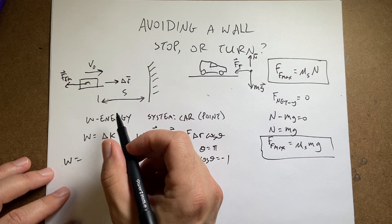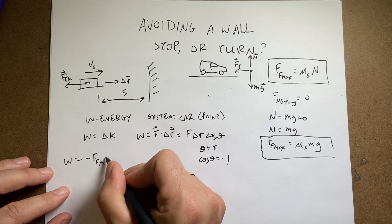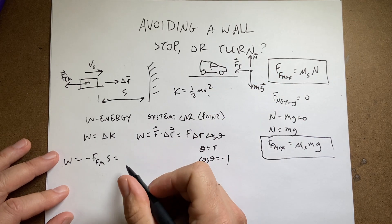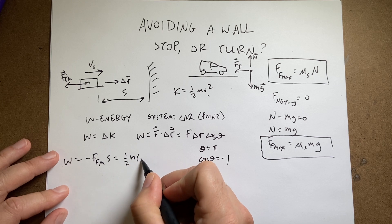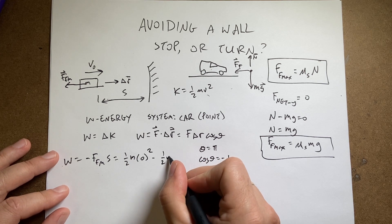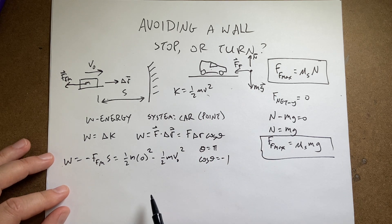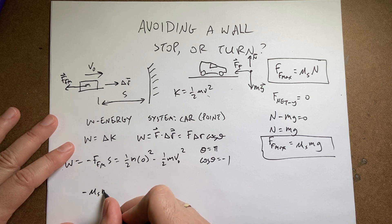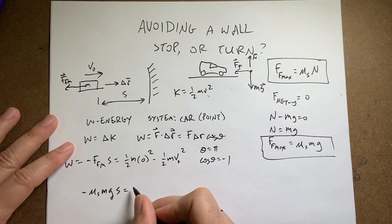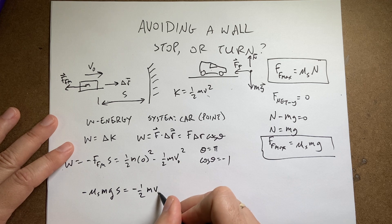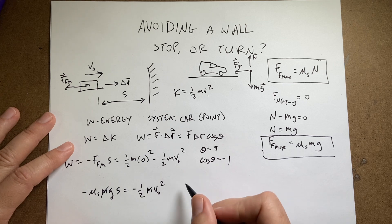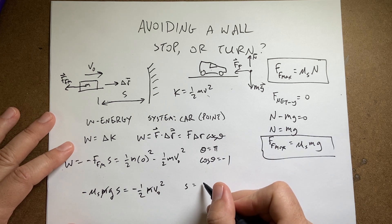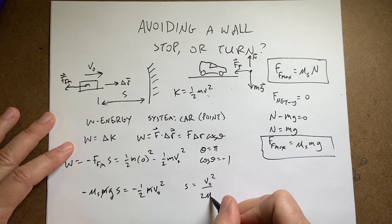So the work done, and I'm going to use s as my distance, is going to be negative the frictional force max times s. And that's going to be equal to the change in kinetic energy. Remember, k is one half mv squared. This is going to be the final kinetic energy. So one half m zero squared, because it stopped, minus the initial kinetic energy, one half mv zero squared. Now also I can put in the expression for the frictional force. And I get negative mu s mg s equals negative one half mv zero squared. And now I want to solve for the distance s. The mass cancels, and I get s equals v zero squared over two mu s g.